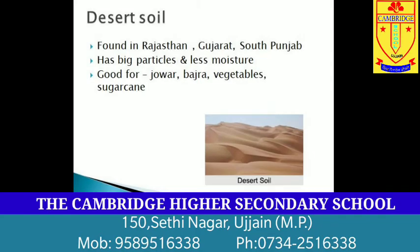Next type of soil is desert soil. Yeh mitti Rajasthan, Gujarat, Dakshin Punjab jaisi sukhiye ilaaqon mein paai jaati hai. Iske particles balu ke particles jaise thode mote hote hain. Is mitti mein moisture kam hota hai. But irrigation makes it fertile — jahaan irrigation ki facilities nahi hoti hai, woh zameen kuchh samay ke liye khaali padi rahti hai ya phir woh dheere dheere banjar hoti hai. Ismein jwar, bajra, sabziyan, ganna jaisi faslein ugai ja sakti hain.